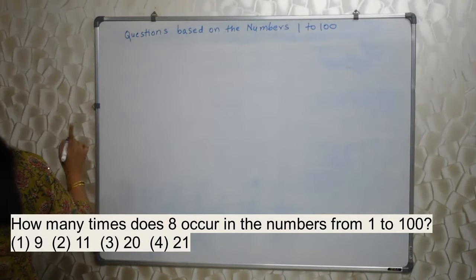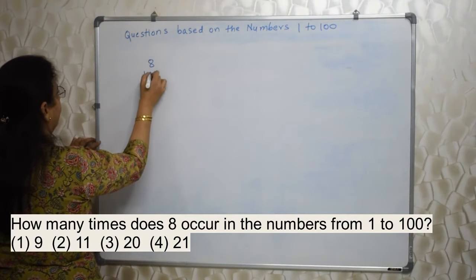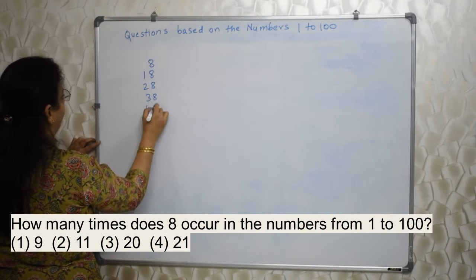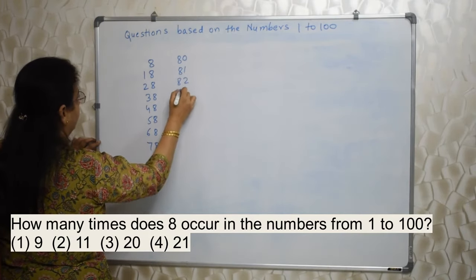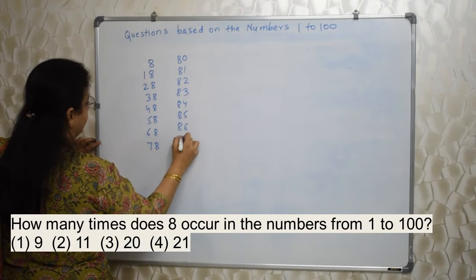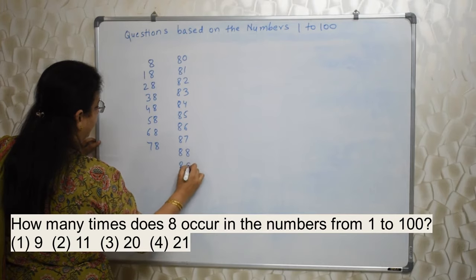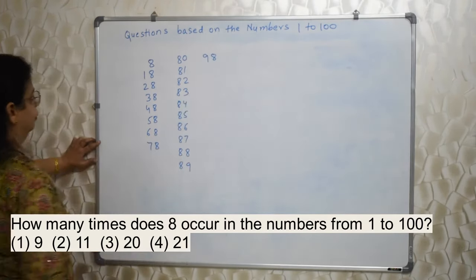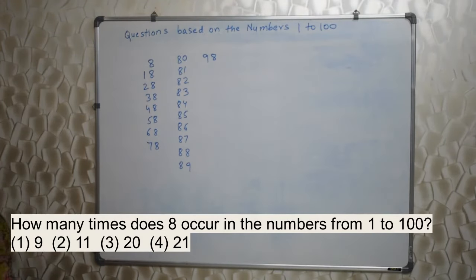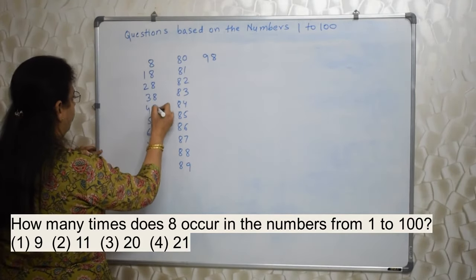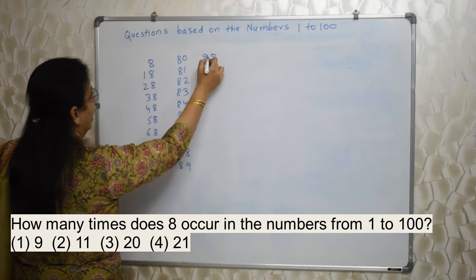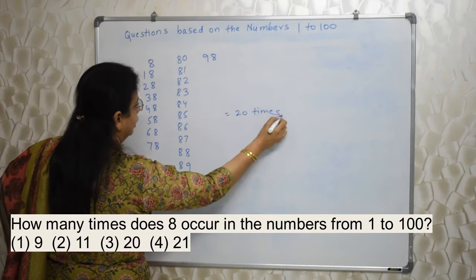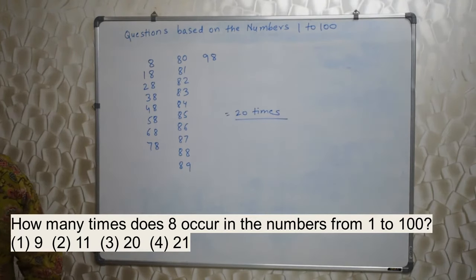Here numbers are 1 to 100, not only 2 digits. So let's start: 8, then 18, 28, 38, 48, 58, 68, 78. Be careful here: 80, 81, 82, 83, 84, 85, 86, then 88 and 89, and 98. You can't afford to miss even a single number here. Now count how many times 8 has occurred: 1, 2, 3, 4, 5, 6, 7, 8, 9, 10, 11, 12, 13, 14, 15, 16, 17, 18, 19, and 20. So 20 times. Isn't it straightforward?